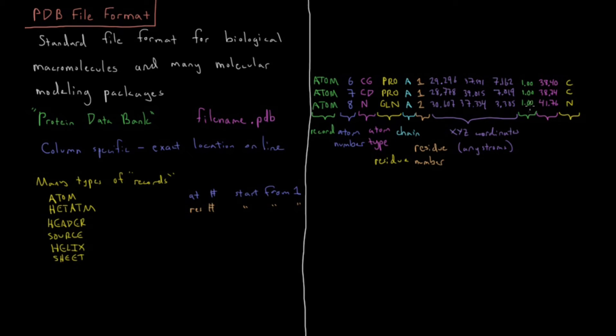Then we have these last two columns which we don't have in X, Y, Z files but are fairly specific to PDB files. The first one being occupancy and the second one being what's called a beta factor.